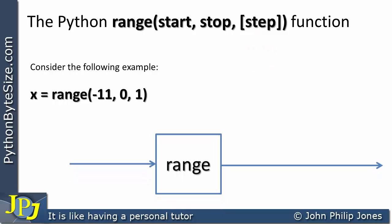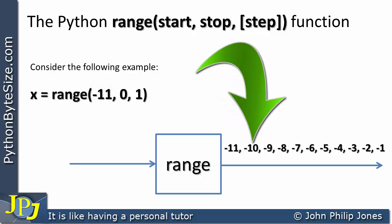When we take the schematic diagram of a function and pass in these numbers, what we get out from the range function is minus 11, minus 10, minus 9, all the way to minus 1. It's minus 11 because that was the start value. We go from minus 11 to minus 10 because the step is 1, so minus 11 plus 1 is minus 10.